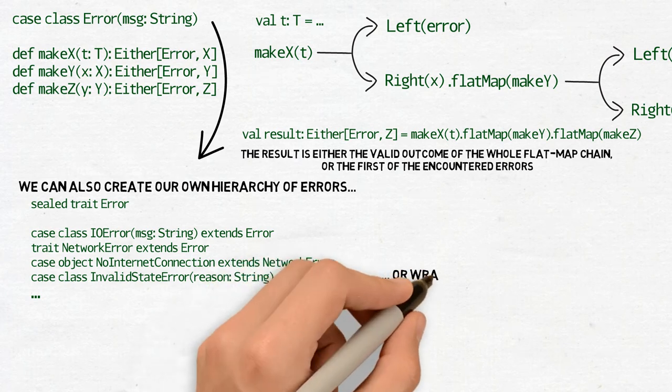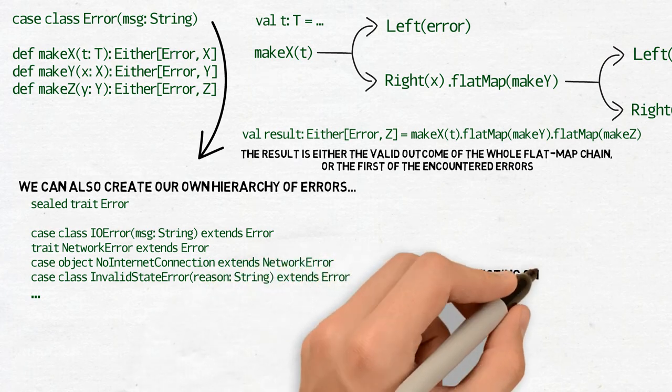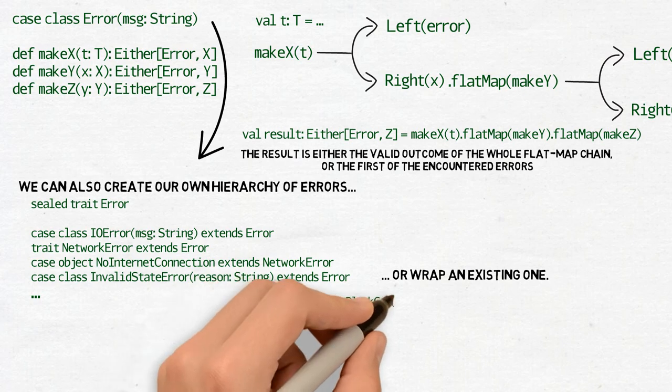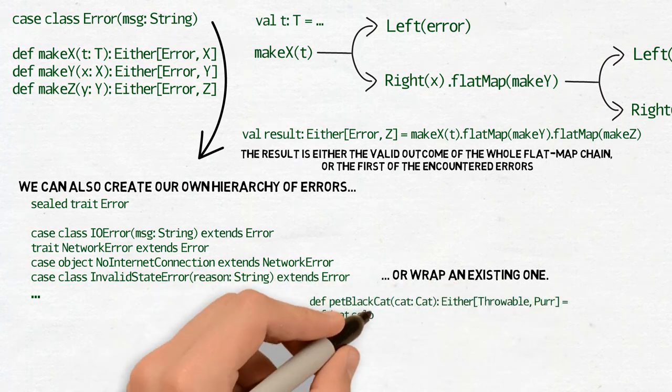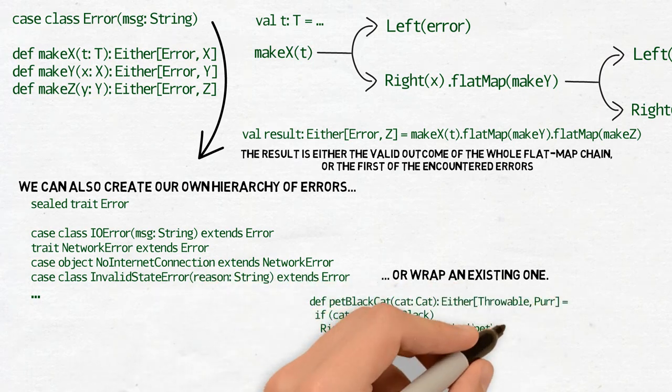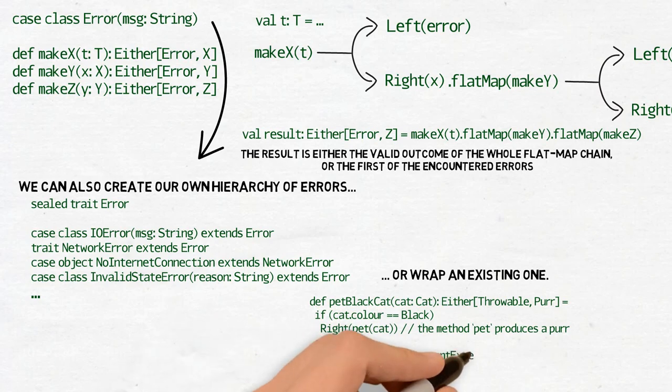This is how the default Java hierarchy of exceptions work. If we feel lazy, we can use that hierarchy instead of creating our own. For example, this method pet black cat returns either right of paw or left of throwable.